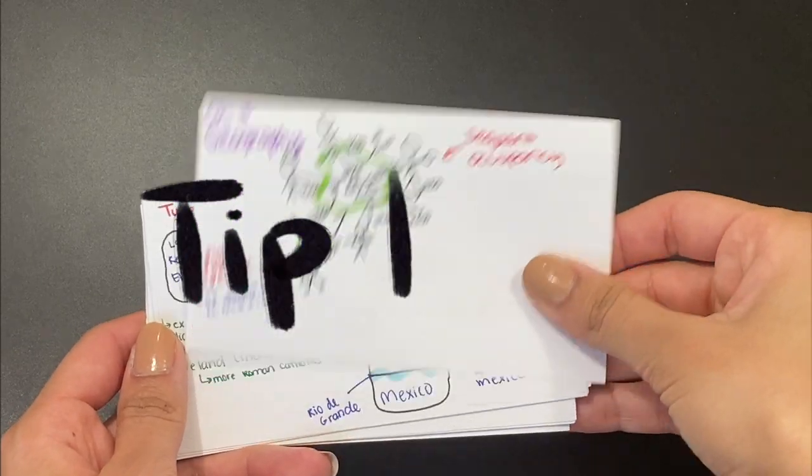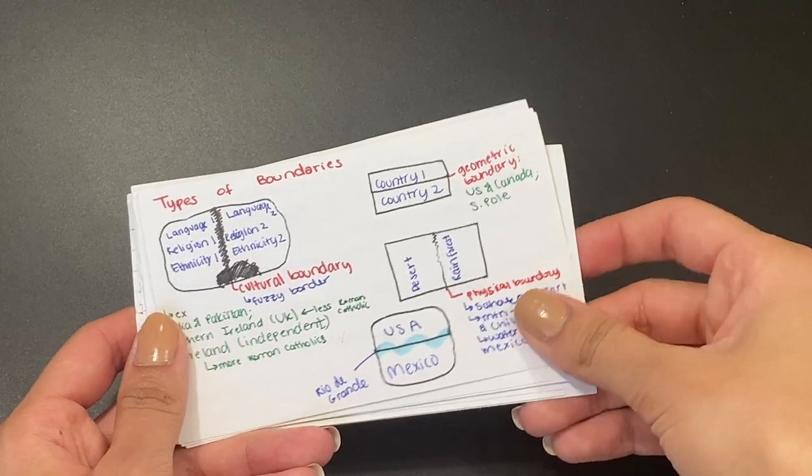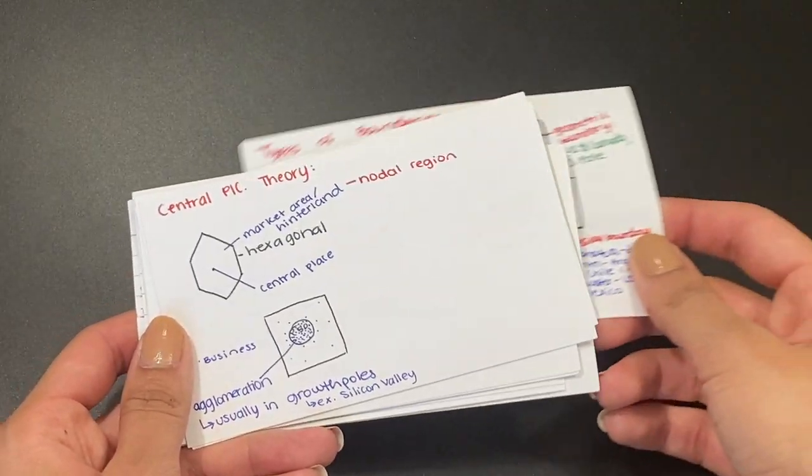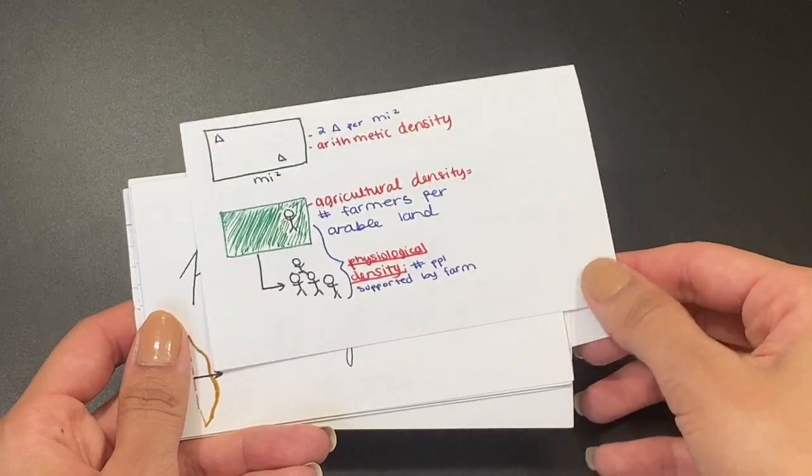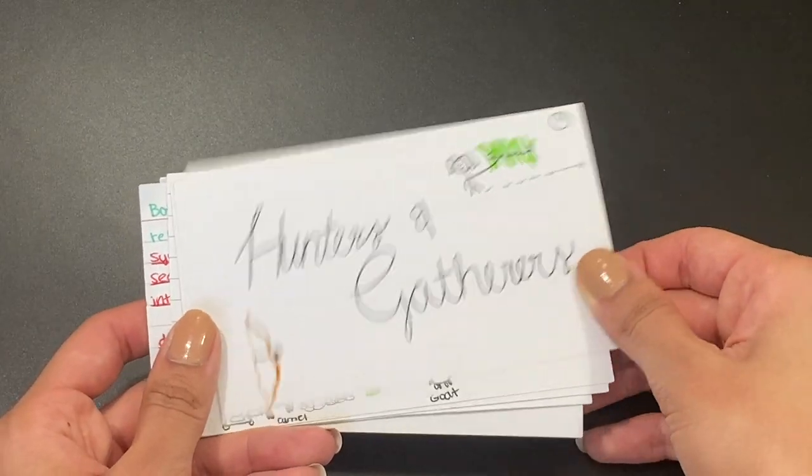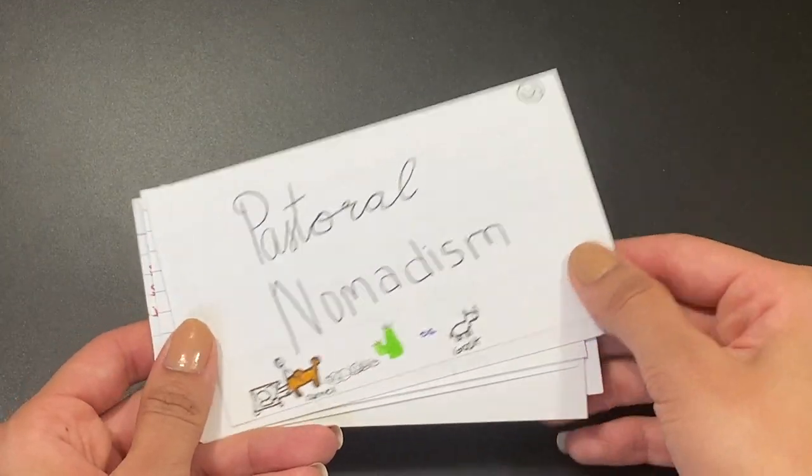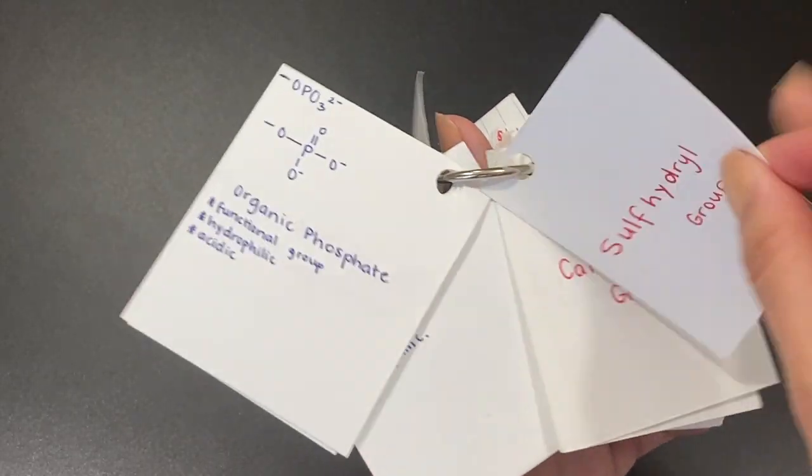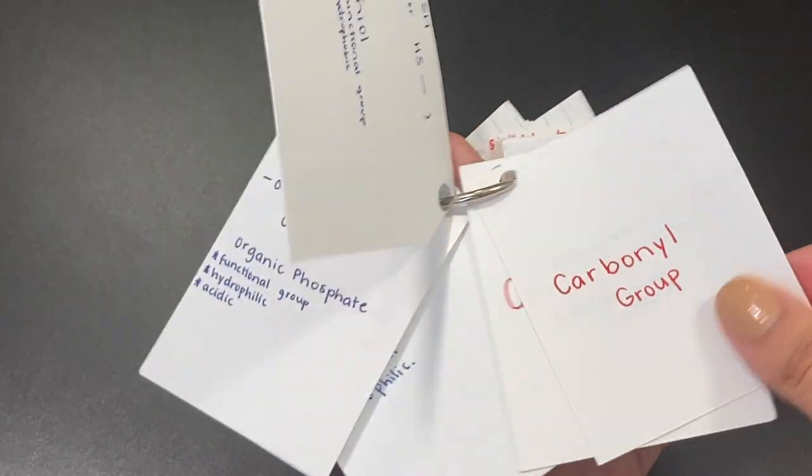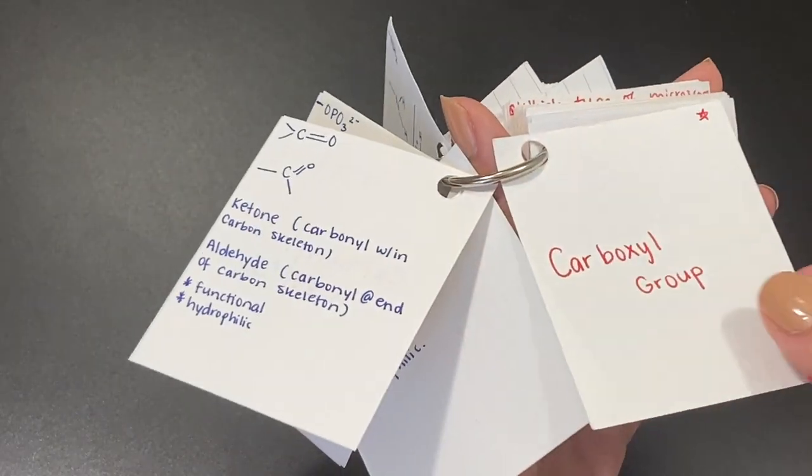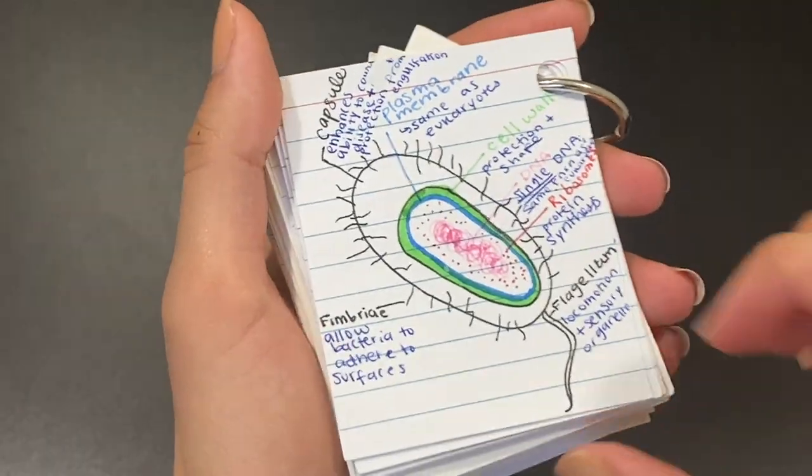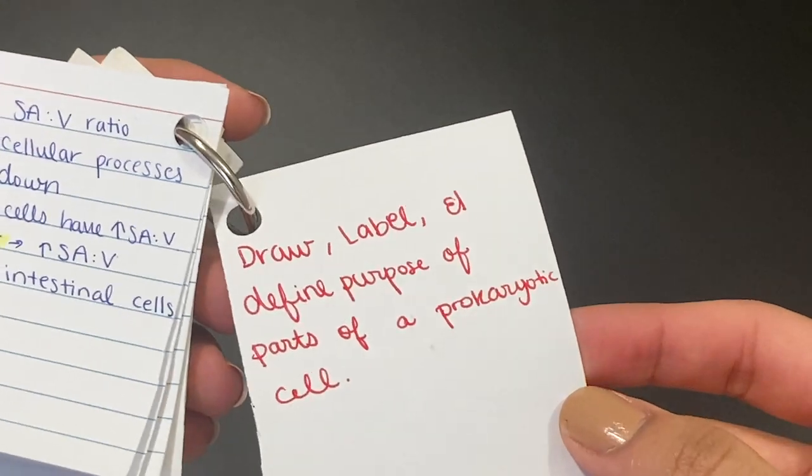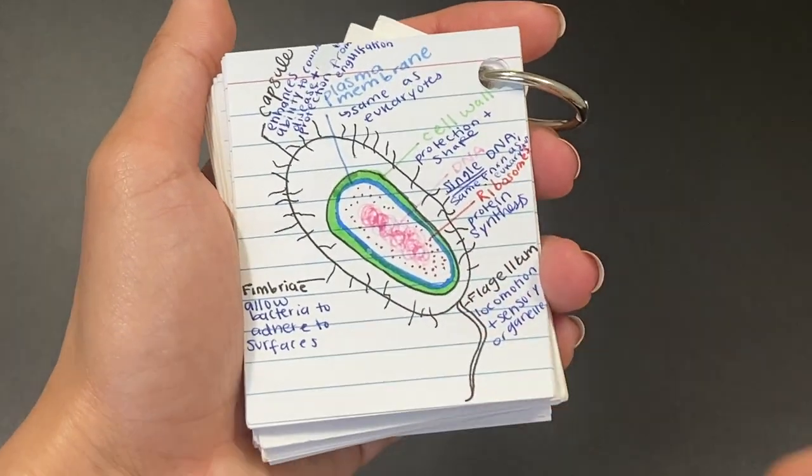Tip number six: include as many simple diagrams into your flashcards as you can. All the flashcards you're seeing in this video, by the way, are completely real flashcards that I've used throughout the past few years to study. Some of them don't include the tips that I've talked about so far because they were made before I really started developing my flashcard method. Make sure that your diagrams are as simple as possible while still including all the information that you need to memorize. If you are a visual learner, this will be great for you because you will be able to memorize the information through images.